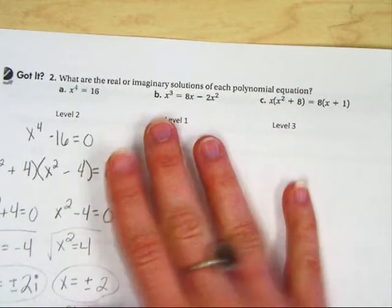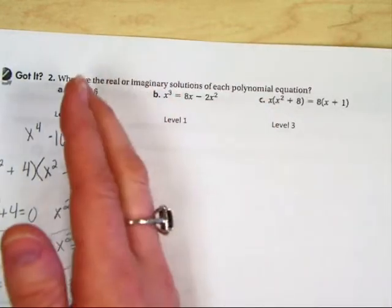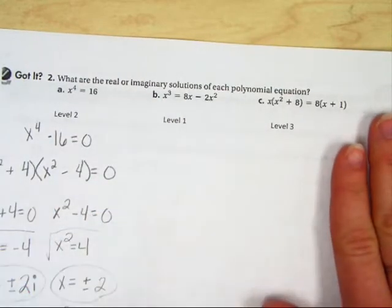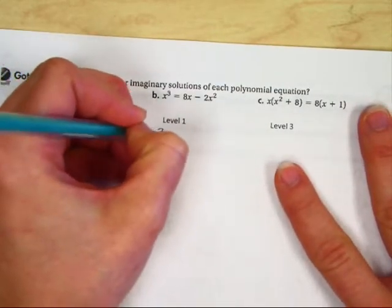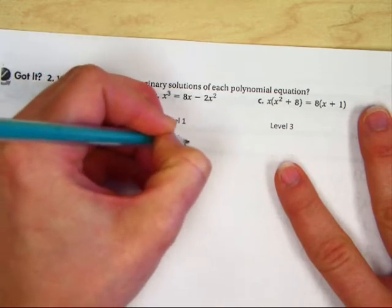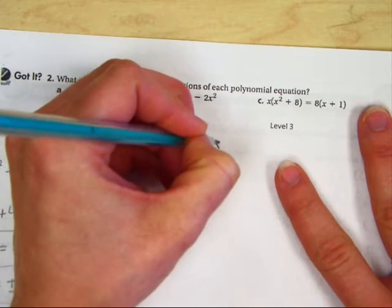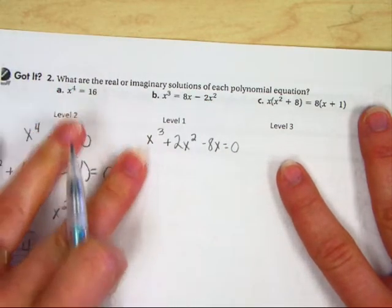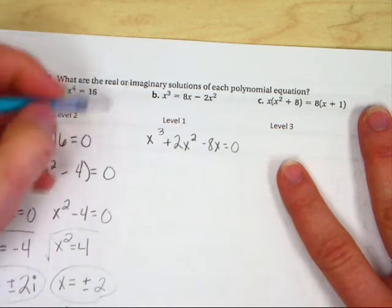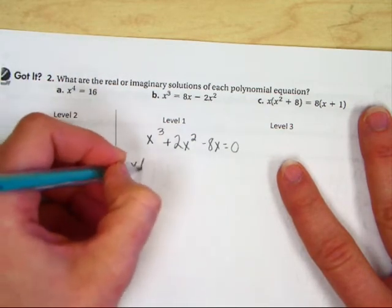Let's go back to a level 1, part b. First step, set it equal to 0, take everything to the left, because that's where the highest degree of x³ is. So x³ + 2x², when you move it across the equal sign, - 8x, when you move it across the equal sign, equals 0. Now we've got to think of how to factor this. First step to factoring, GCF. Pull out an x.